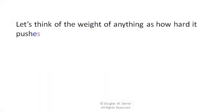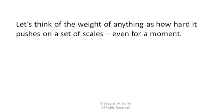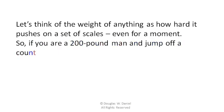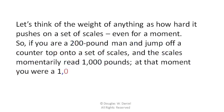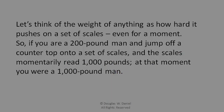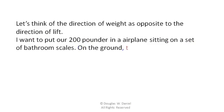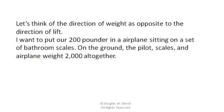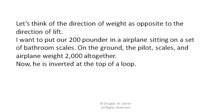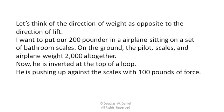Let's think of the weight of anything as how hard it pushes on a set of scales. So, if you're a 200-pound man and jump off the countertop onto a set of scales, and the scales momentarily read 1,000 pounds, at that moment you were a 1,000-pound man. Let's think of the direction of weight as opposite to the direction of lift. If we put our 200-pounder in an airplane sitting on a set of bathroom scales, and he is inverted at the top of a loop, pushing up against the scales with 100 pounds of force — at that instance, he is a 100-pounder.